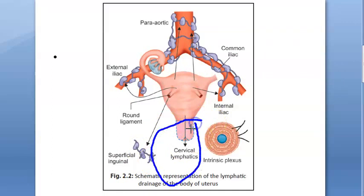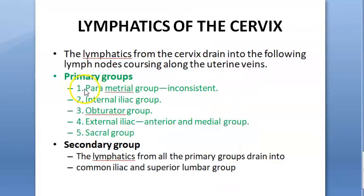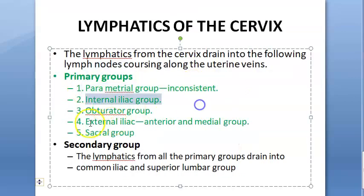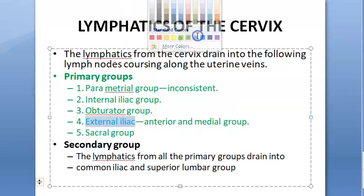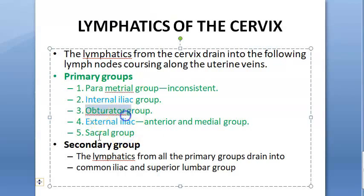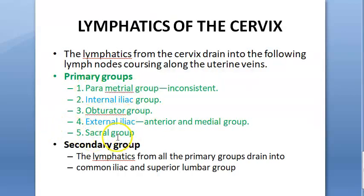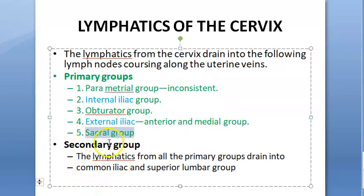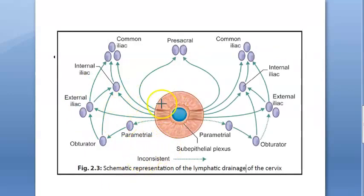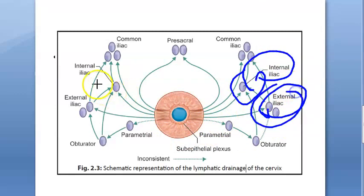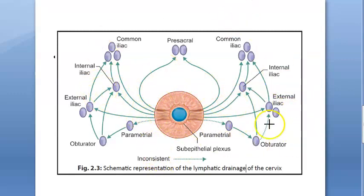What we need to understand is just the primary drainage of the cervix. You have the parametrial group, internal iliac, external iliac, obturator group, and sacral group. Everything around your cervix - you have the sacral, the external iliac, the obturator, and the parametrial. The left and right are symmetrical, so you can write internal iliac, external iliac, parametrial, obturator.